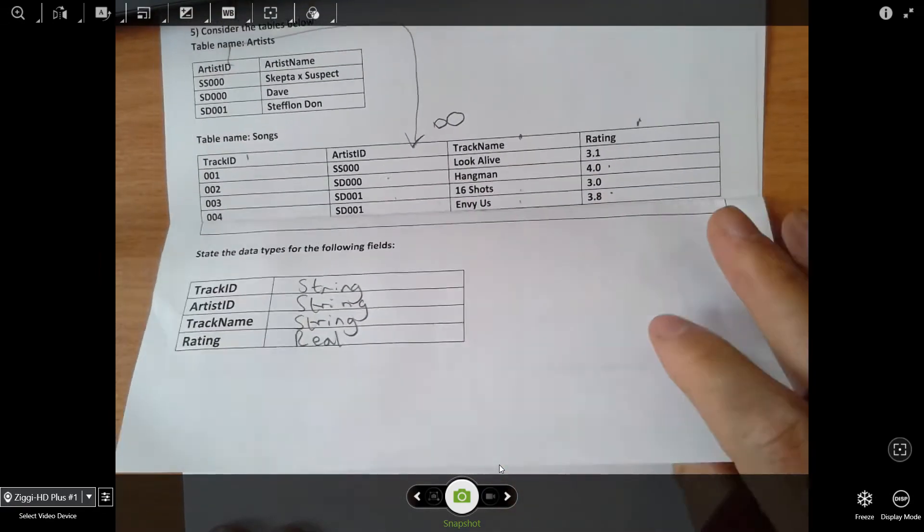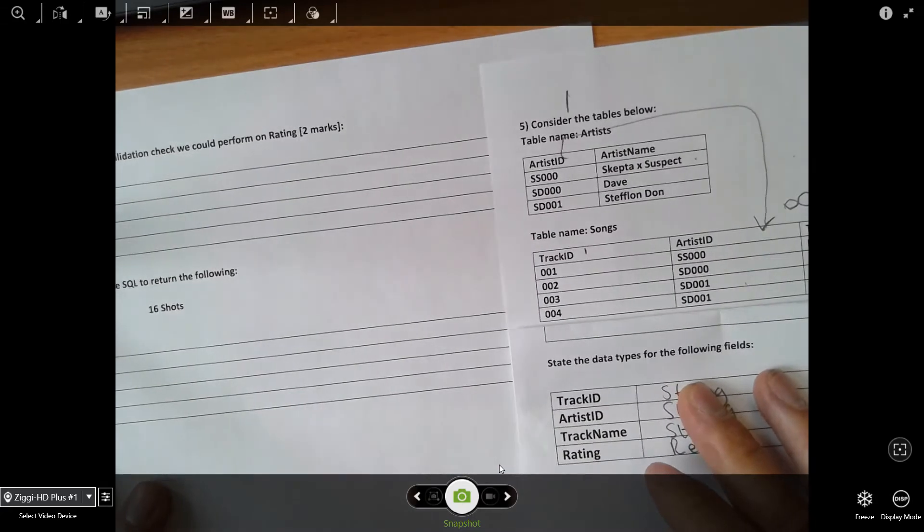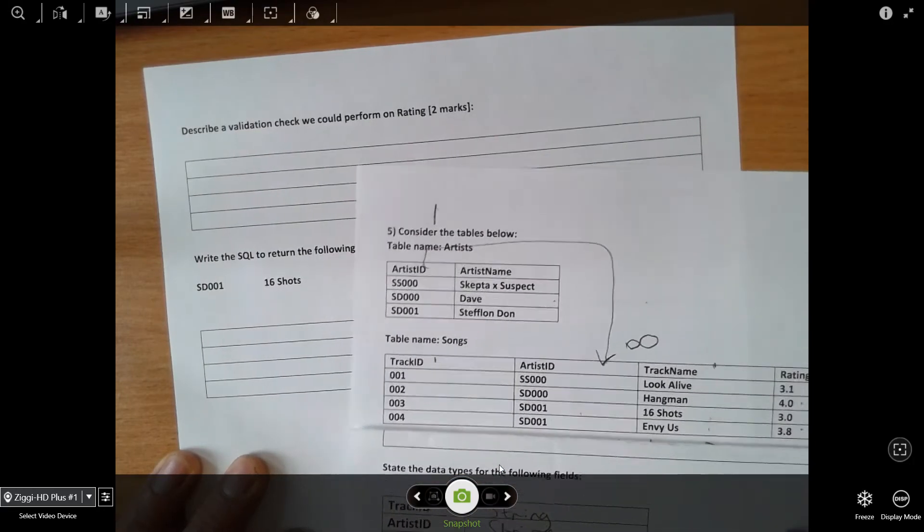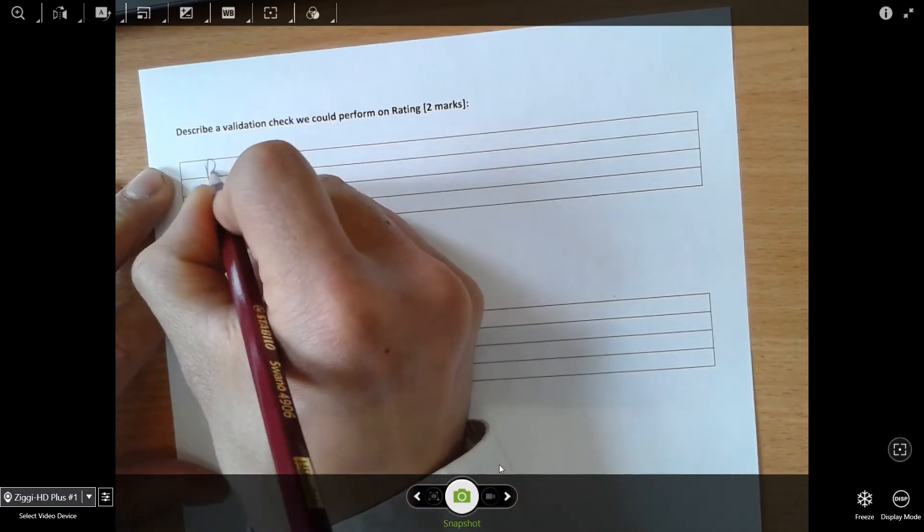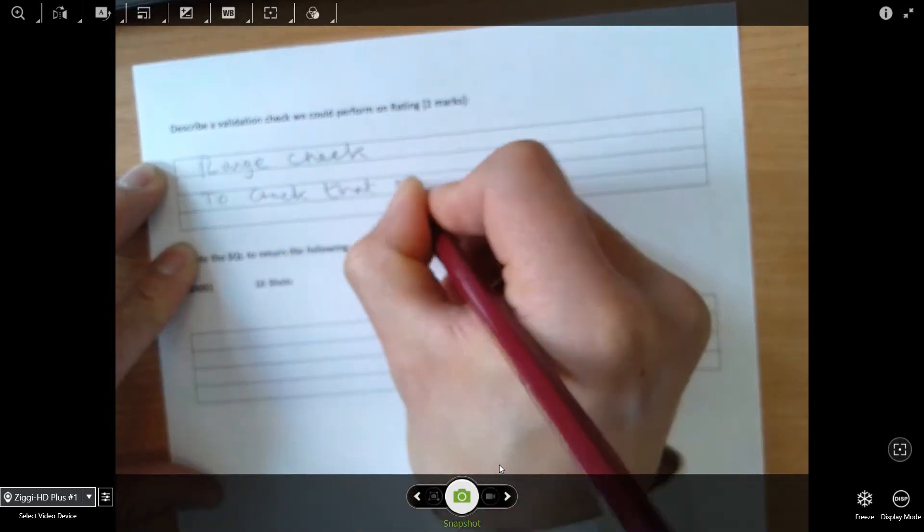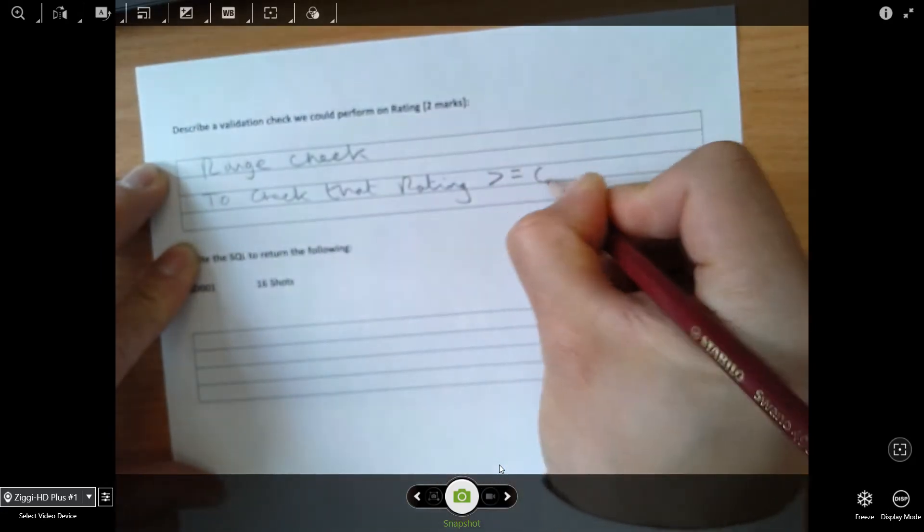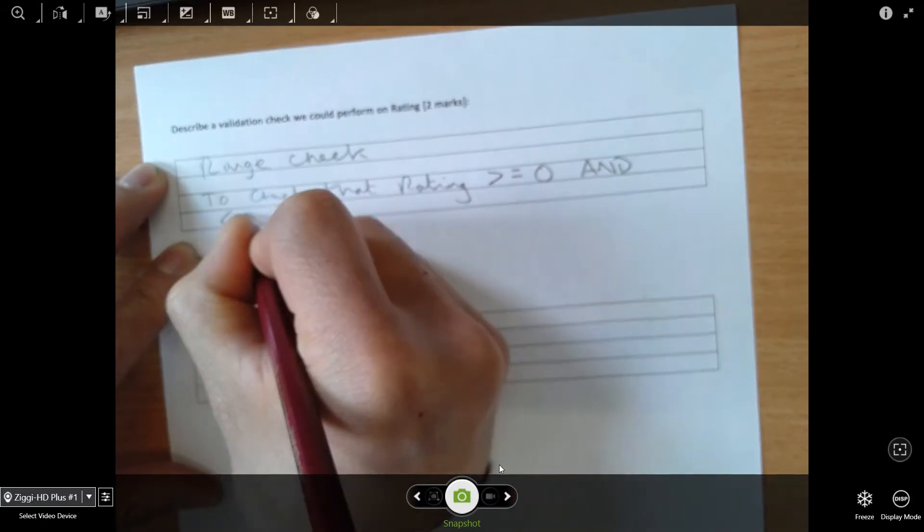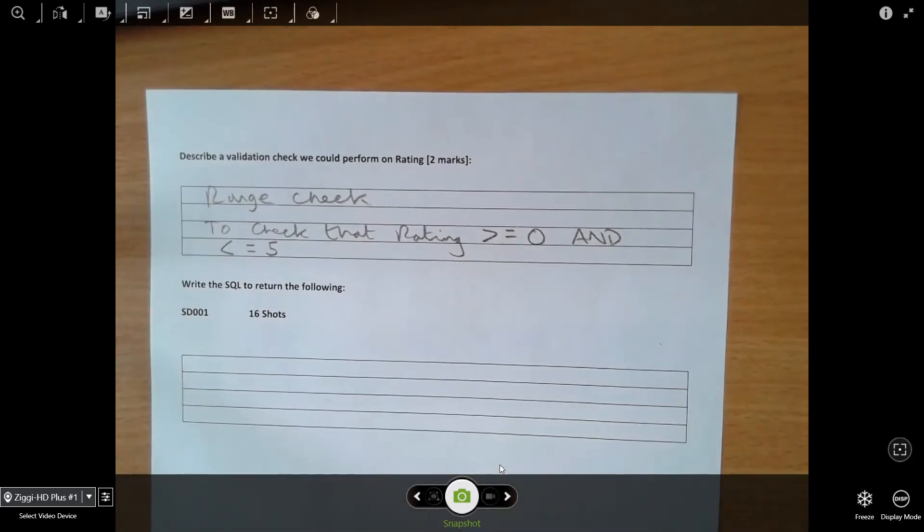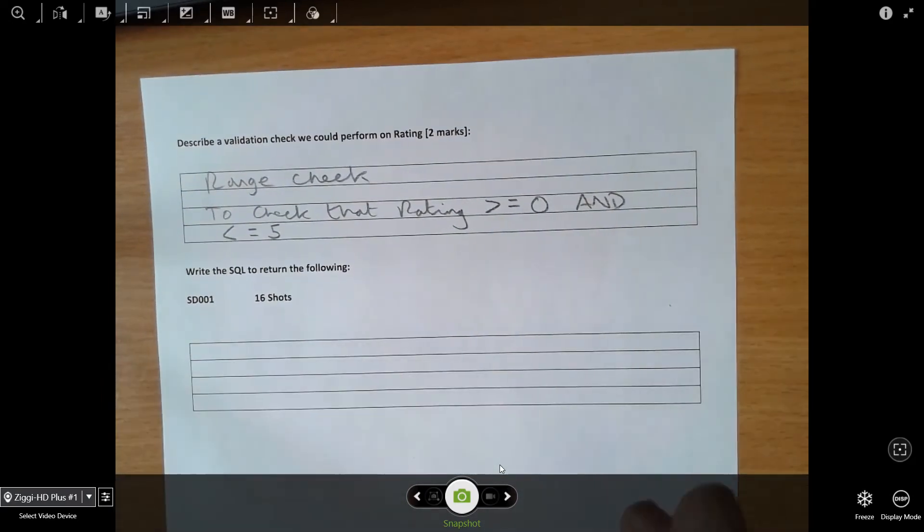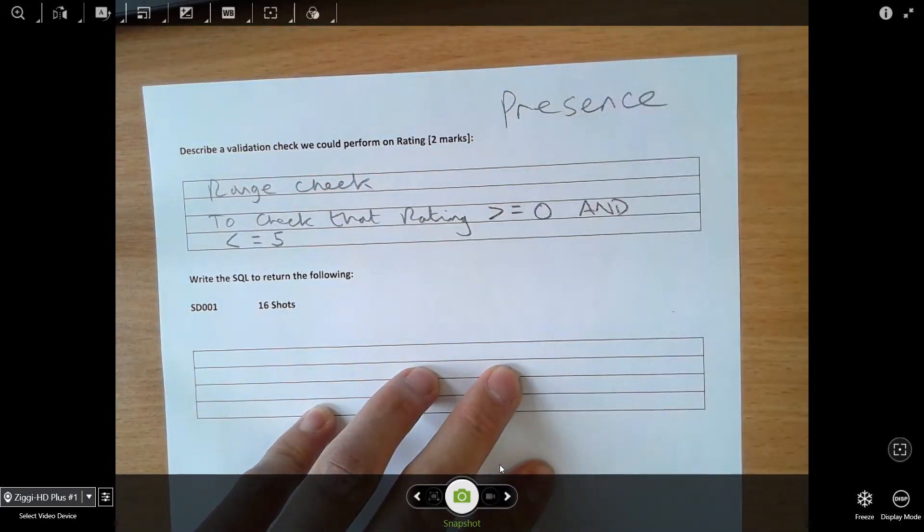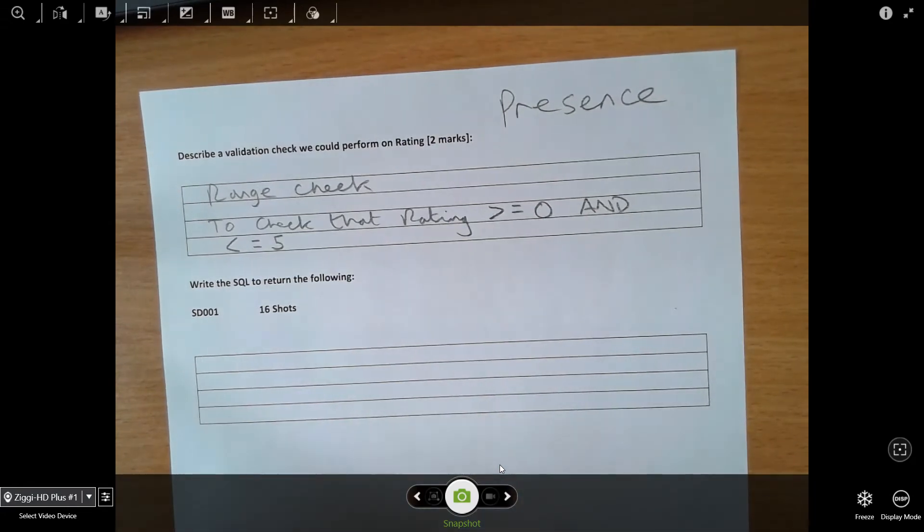The next question says describe a validation check we could perform on rating. What I would say is it's got to be a range check - for one mark, a range check. And then to describe it, I would say to check that rating is more than or equal to zero and less than or equal to five, assuming that the ratings here are out of five. The only other types of checks you really need to know about are presence check - is the field empty, is something present there? And you could also have a length check, but you can only really do that on strings.